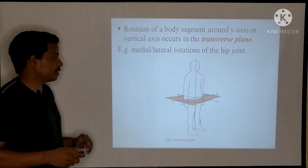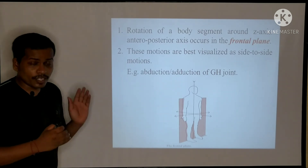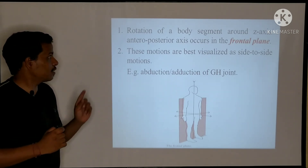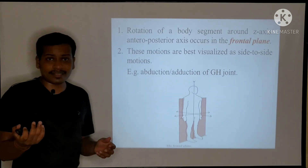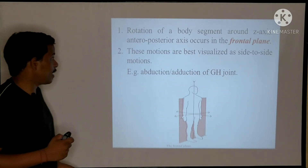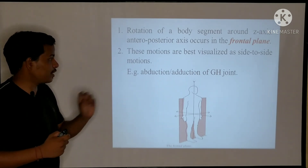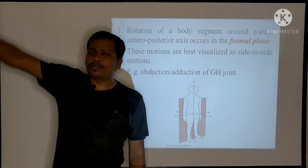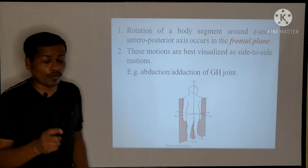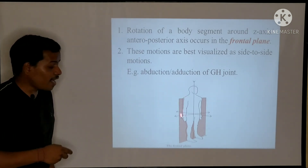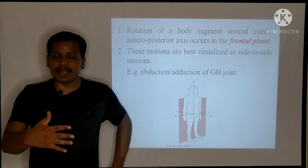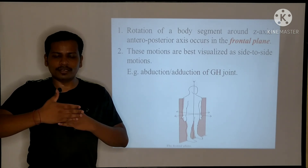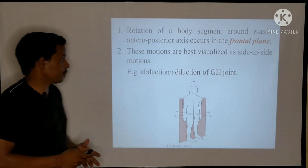The frontal plane involves rotations of the body segment that occur around the Z-axis, or anteroposterior axis. These motions are best visualized from side to side — for example, abduction and adduction of the glenohumeral joint. The frontal plane also divides the human body into front half and back half.